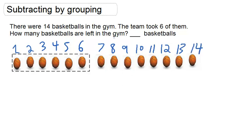So then it says the team took 6 of them. So we can think of that as 14 minus 6, because the team took 6 away from the 14 basketballs that there were to start.